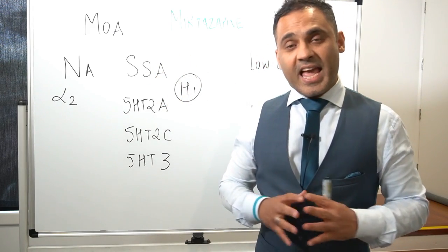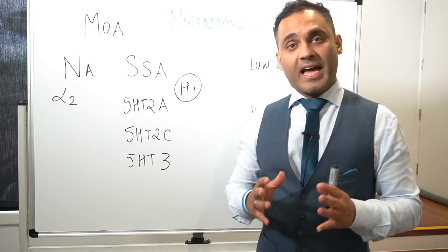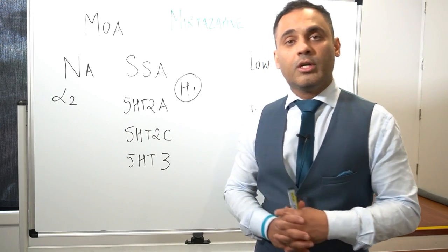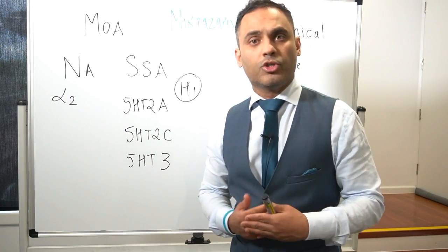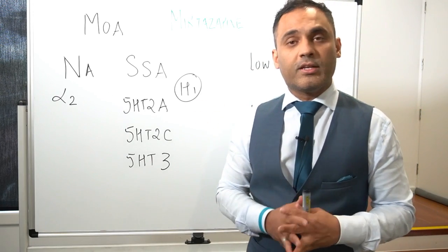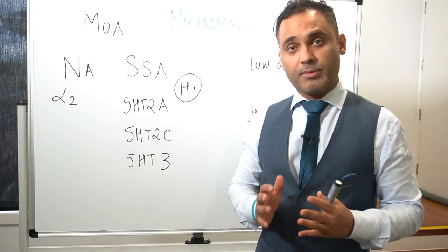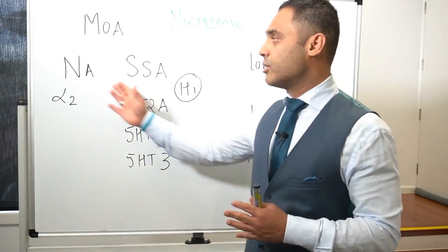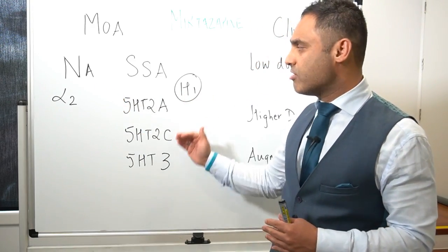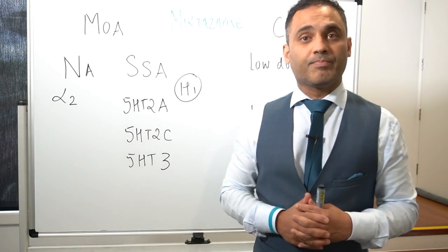Now these SSA receptor antagonism tends to occur at lower doses, usually somewhere between 15 to 30 milligrams. That doesn't mean you don't get the NA effect, but just generally you tend to get these at lower doses.